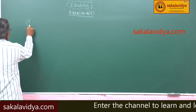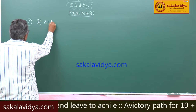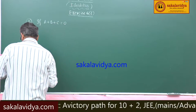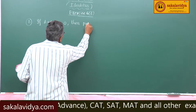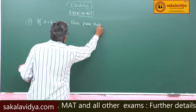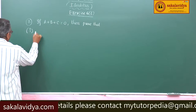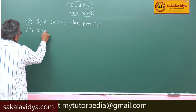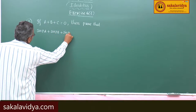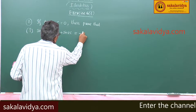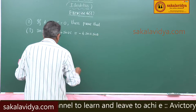Eighth problem. If A plus B plus C is equal to 0, then prove the first part: sine 2A plus sine 2B plus sine 2C is equal to minus 4 sine A, sine B, sine C.